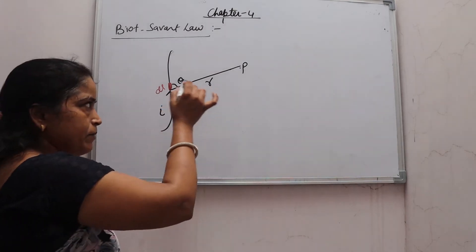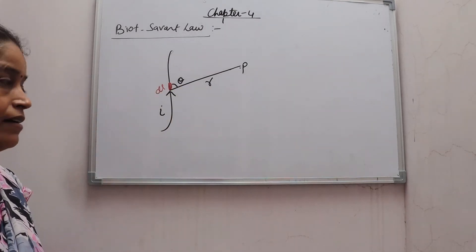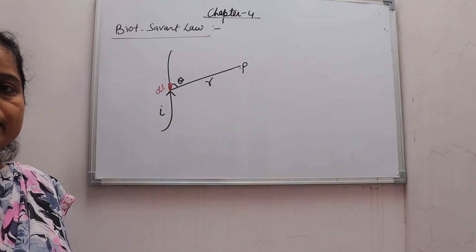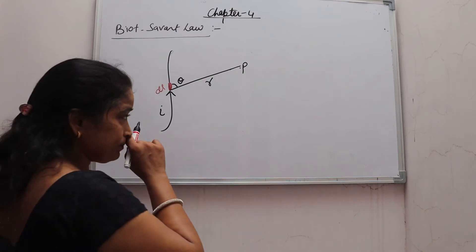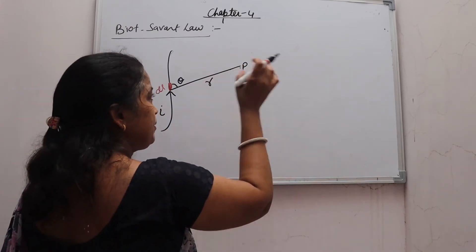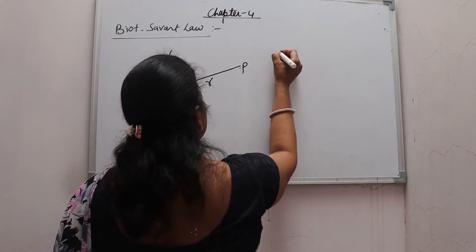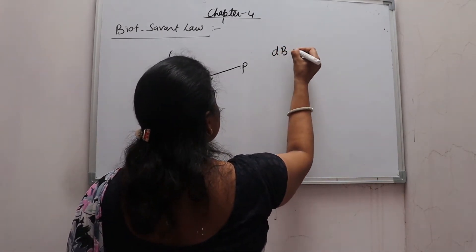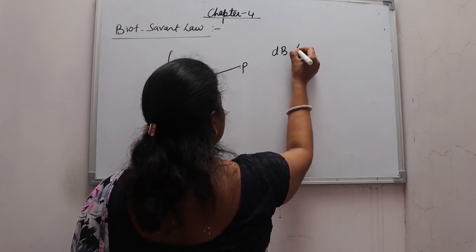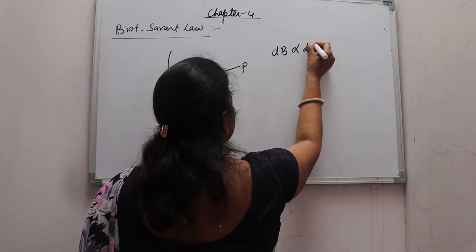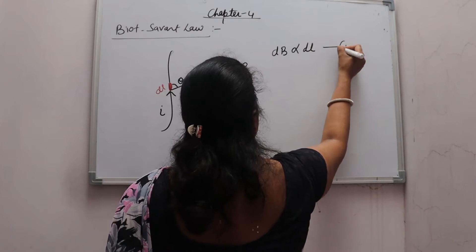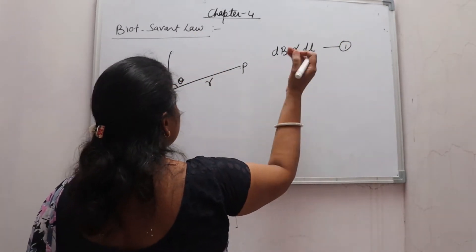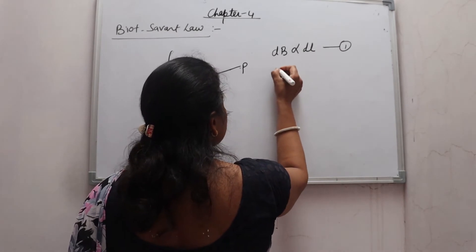DL and R — what is the angle between them? Theta. The direction of DL will be the same as the direction of current. So the intensity of magnetic field at end point P, suppose that is DB — a small amount of intensity. DB is directly proportional to DL — number 1. If you increase the length element, that small element, then the intensity will increase.